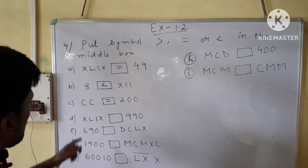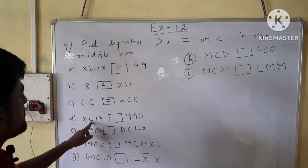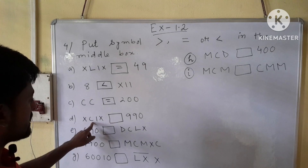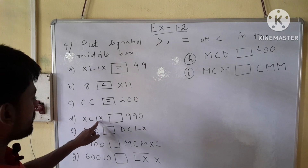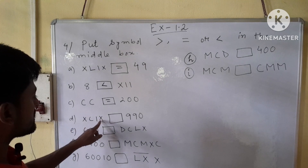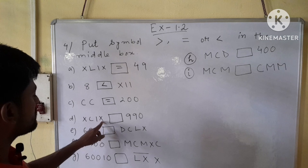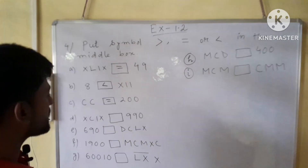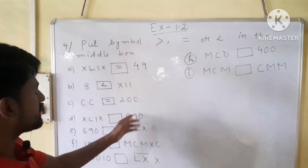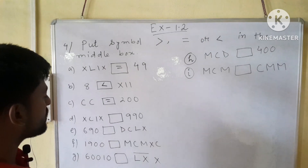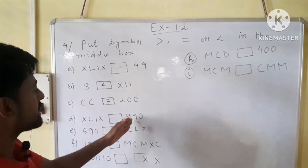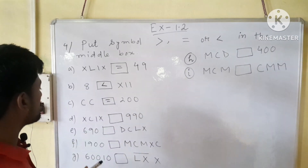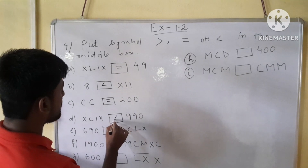Number D: XC makes 90, and IX makes 9, so it will be 99. But on the right side of the box we have 999. So it will be less than.